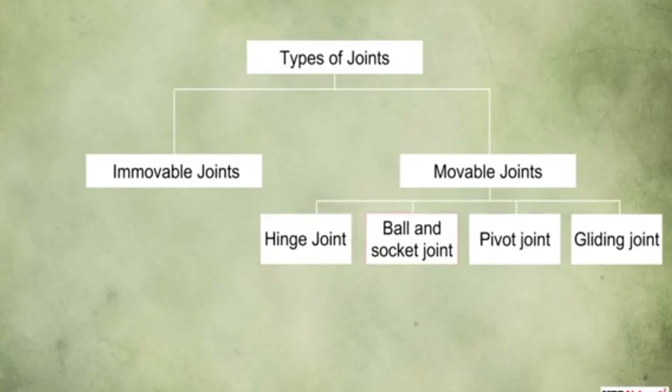Movable joints are further of four different types: the hinge joint, the ball and socket joint, the pivot joint, and the gliding joint. Let us learn about each joint one by one.